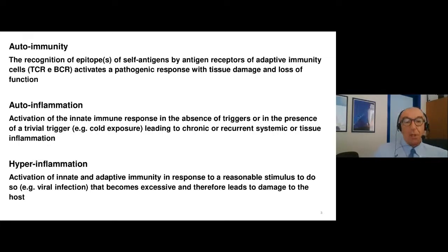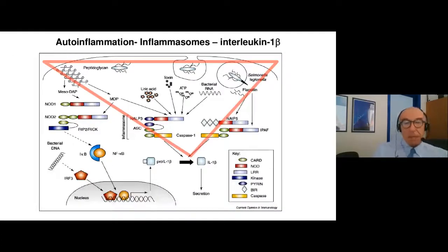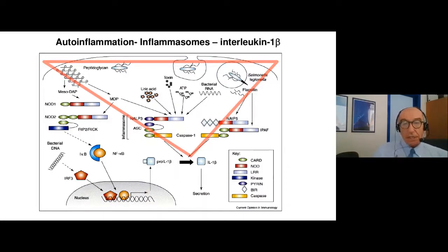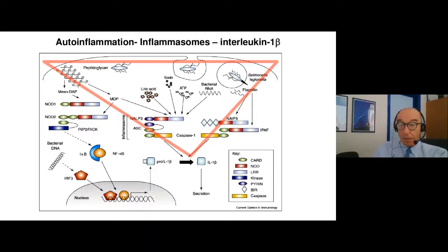Autoinflammation is a little bit more rare, but the functional definition is activation of the innate immune response in the absence of triggers or in the presence of a trivial trigger. For example, cold exposure — cold urticaria is maybe an autoinflammatory disease triggered by a trivial stimulus of the innate response — and this again leads to damage to the organism.